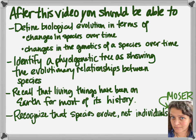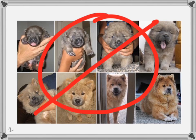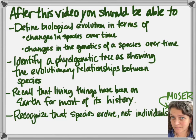You got questions? Write them down. We're just getting started. Hopefully we'll be able to answer all your questions in the course of this unit. Let's just review what you should be able to do. Can you define biological evolution both in terms of changes in a species and changes in the genetics of a species over time? Can you identify a phylogenetic tree and do you know that it shows evolutionary relationships between species? Do you remember that living things have been on earth for the vast majority of its history? And do you recognize that it's species that evolve, not individuals? Gratuitous cute puppy picture — that's not evolution though. Go on and do your recap, reflect, and review.